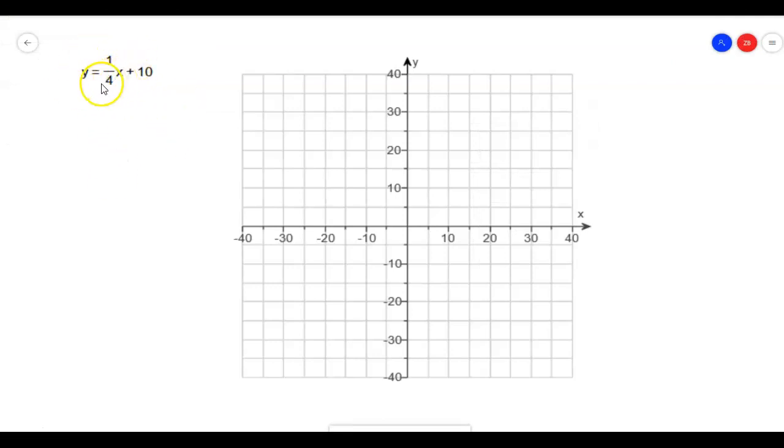All right, so here is our equation. I've got a graph, and the first thing I want to do, so I'm using transformations, is I'm going to start with the simplest graph that I can using this form here of a straight line. And the simplest one I can think of here is y is just equal to x. And then we can use transformations to see what this one here is going to look like.